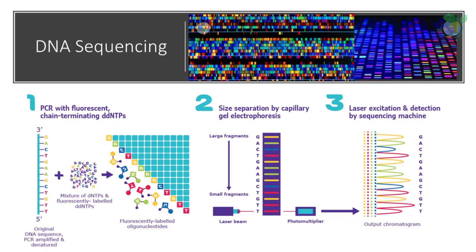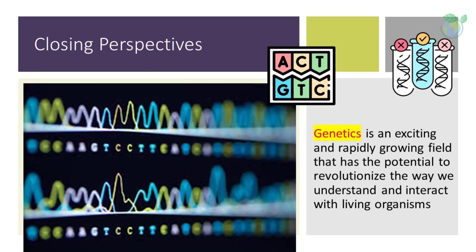Researchers can use DNA sequencing to identify variations in a person's genome and determine the genetic basis of diseases. Another important aspect of genetics is epigenetics, which refers to changes in gene function that are not the result of changes in DNA sequence. These changes can also influence the development of disease and can be inherited across generations. In conclusion, genetics is an exciting and rapidly growing field that has the potential to revolutionize the way we understand and interact with living organisms. It has far-reaching implications for medicine, agriculture, and biotechnology, and will continue to shape our world for many years to come.